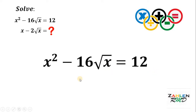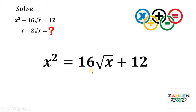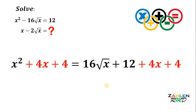Now, add 16 times square root of x on both sides and we get x squared equals 16 times square root of x plus 12. Now, the trick here is if we add 4x plus 4 on both sides, the left side and the right-hand side are both factorable. This is not obvious on the right-hand side, but both sides of this equation are factorable.